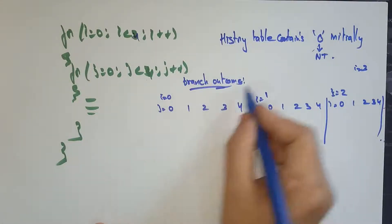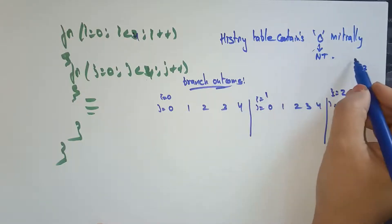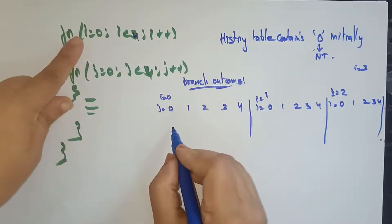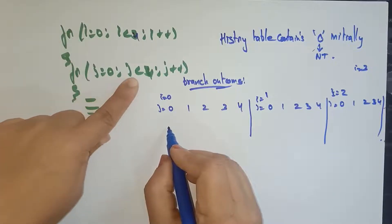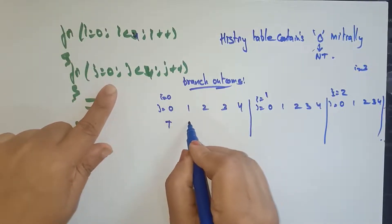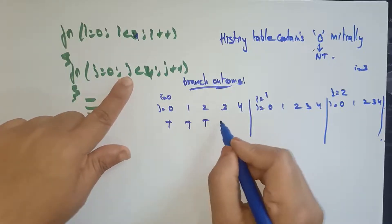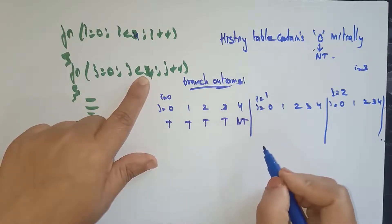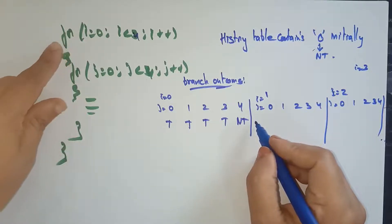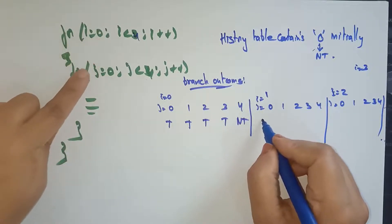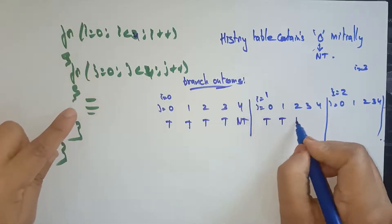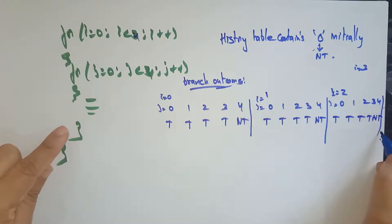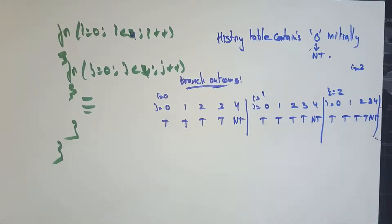The history table starts with 0. When j = 0, the condition 0 < 4 is true — branch taken. When j = 1, taken. When j = 2, taken. When j = 3, taken. When j = 4, not-taken — branch exits the inner loop. For i = 1, the pattern repeats: taken, taken, taken, taken, not-taken. For i = 2, the same again. This is the branch outcome.